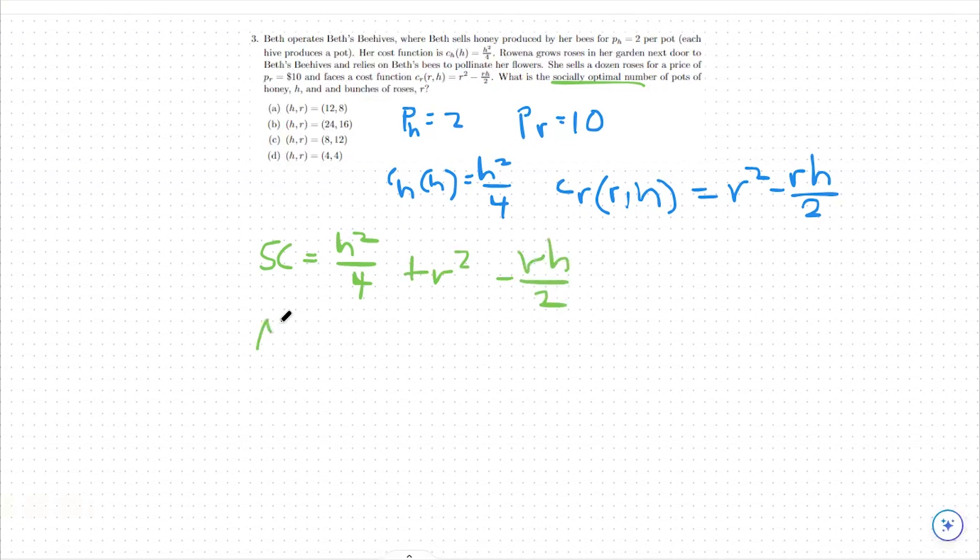From there, we can take something called our marginal social cost. We can take that specifically with respect to honey first. So our marginal social cost with respect to honey is just our derivative of our social cost function with respect to the variable h. So what we see there is going to be h over 2. We're just dropping down this 2 and then simplifying the fraction 2 over 4. There's no h in this term, so we just get rid of it. And then here, we have a minus rh over 2. That's just going to turn into minus r over 2. So this is our marginal social cost for honey.